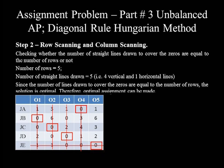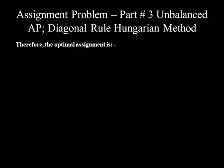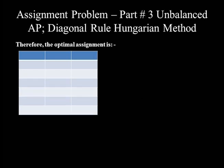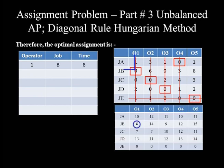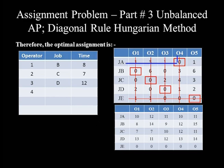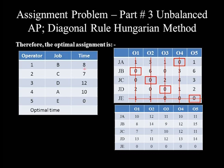The optimal assignment following the zeros inside the rectangles: Operator 1 is assigned to job B — 8 hours. Operator 2 is assigned to job C — 7 hours. Operator 3 is assigned to job D — 12 hours. Operator 4 is assigned to job A — 10 hours. Operator 5 is assigned to the dummy job E — 0 hours. Total optimal time = 8 + 7 + 12 + 10 + 0 = 37 hours.